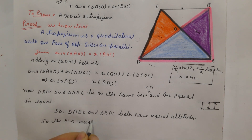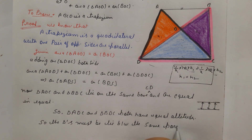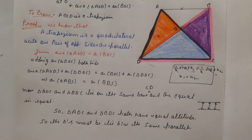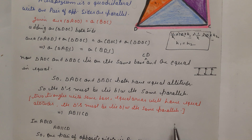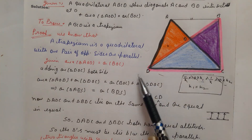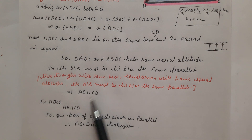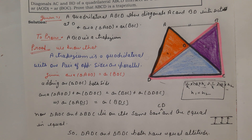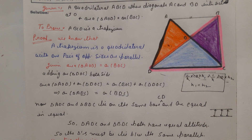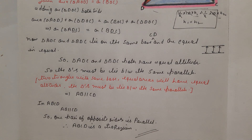Since both triangles have equal altitudes and the same base, they must lie between the same parallel lines. This implies AB is parallel to CD in the figure. Therefore, in quadrilateral ABCD, AB is parallel to CD — that is, one pair of opposite sides is parallel. Hence ABCD is a trapezium. I hope you understood. Write all points carefully to get full marks. If you have any doubt, please comment below. Thank you.